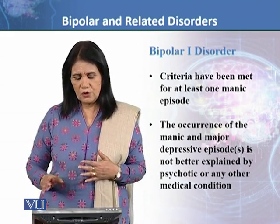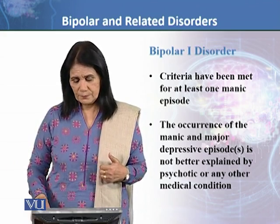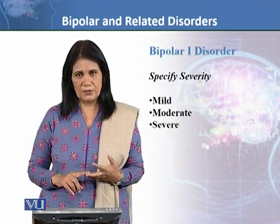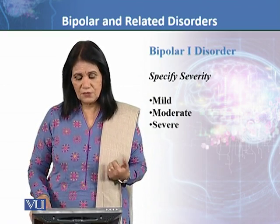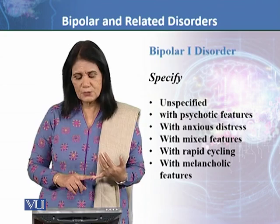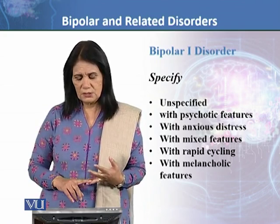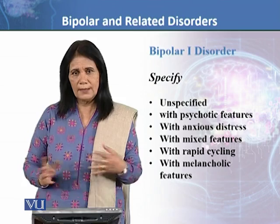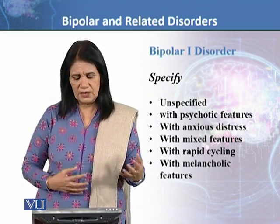All these symptoms must not be attributed to any psychotic disorder or other medical condition. When diagnosing, you need to specify severity — whether it is mild, moderate, or severe. Severity is one specifier. The second specifier is whether the episode is unspecified, meaning the clinical picture is not clear regarding the manic or depressive episode.